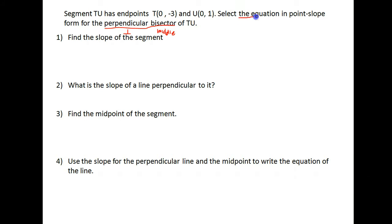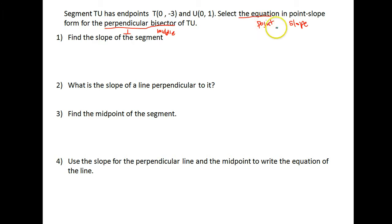If we're going to write the equation of a line, we have to have two things: we have to have a point, and we have to have a slope. The point needs to go right through the center of TU, so we want it to go through the midpoint. For the slope, we want it to be perpendicular to TU, so we'll find the slope of TU and then determine the slope for a line perpendicular to that.